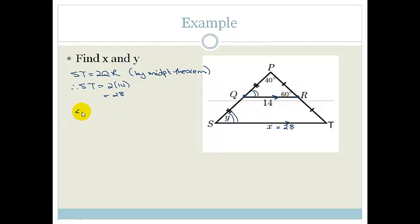So angle PQR is equal to 180 degrees minus 40 plus 60. 40 and 60 is 100, so 180 minus 100 is just 80 degrees.